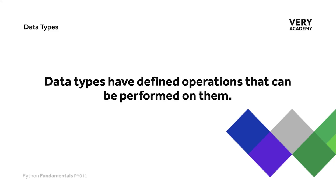Data types also have predefined operations that can be performed on them. For example, if we had the numbers 100 and 50 assigned as integers, we could add, subtract, divide, or multiply them. However, if we assigned 100 and 150 as strings, we couldn't necessarily perform those same operations — we couldn't divide or multiply them with the outcome being a number.